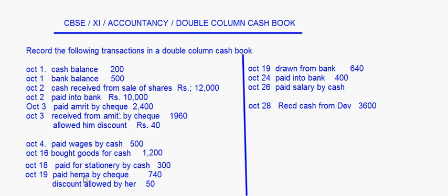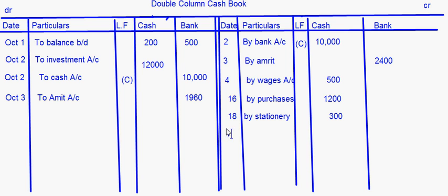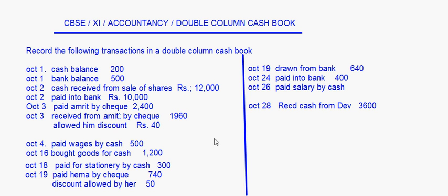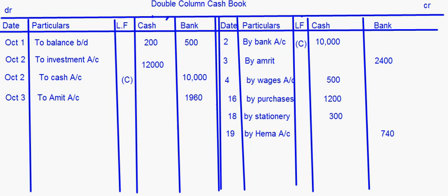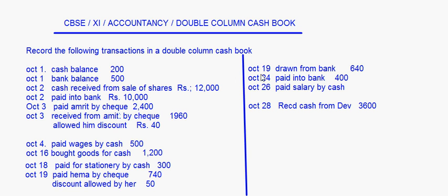October 19th: paid Hema by check, discount allowed by her is 50 rupees. The discount is not of any concern here — it will appear in the journal, not in the double column cash book. We only record: paid Hema by check — write 'by Hema account' in the bank column as 740. Discount allowed and discount received do not appear in the double column cash book.